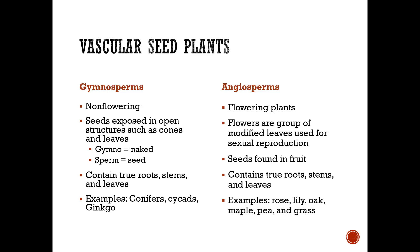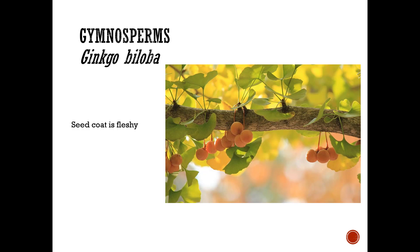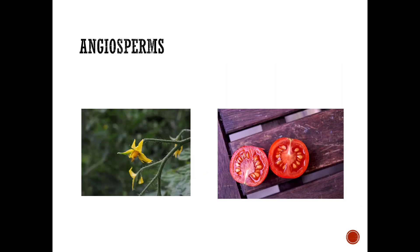Angiosperms are flowering plants where flowers are modified leaves used for sexual reproduction, and seeds are found within an ovary that protects them. They also contain true roots, stems, and leaves. Examples include roses, lilies, oaks, and maples. Here we can see a cycad and a pine cone as gymnosperm examples, ginkgo with its fleshy seed coat, and a classic angiosperm — tomatoes.